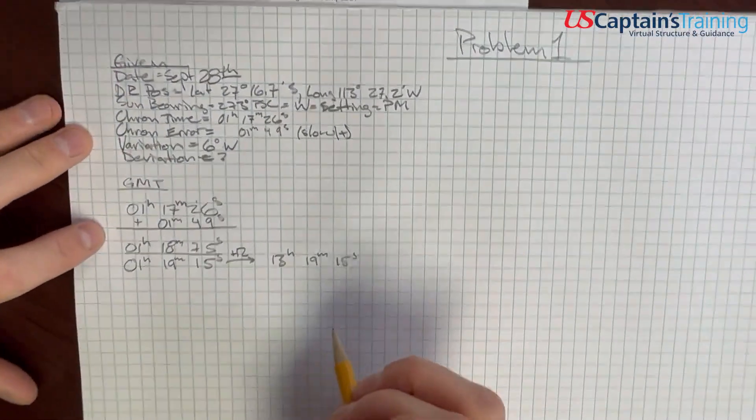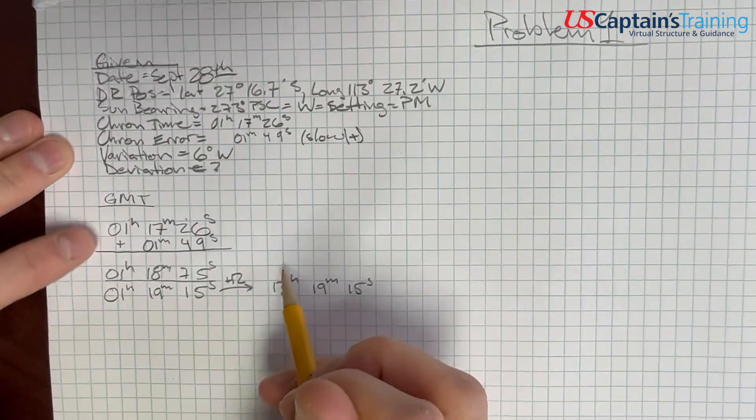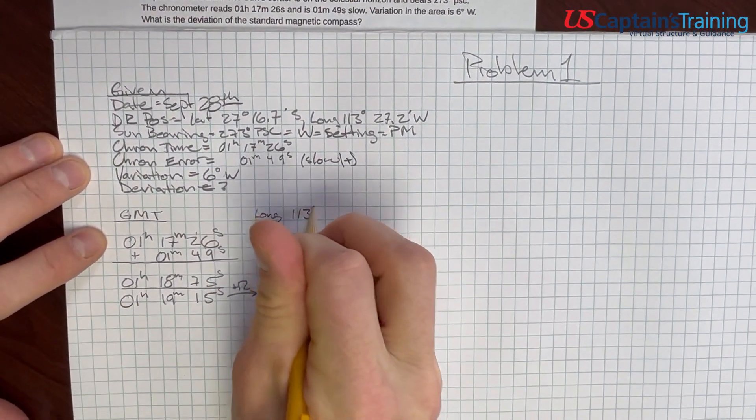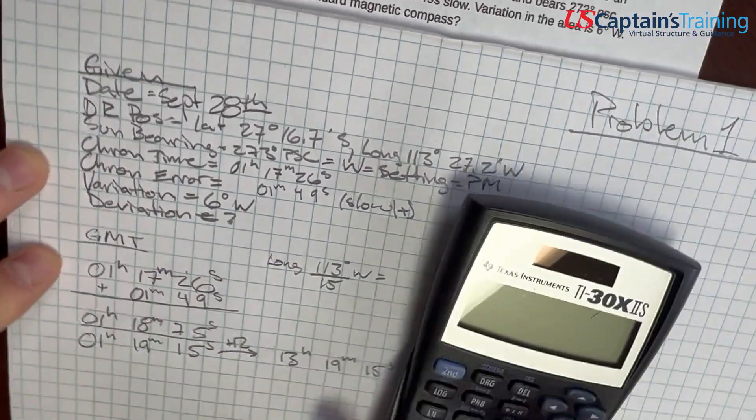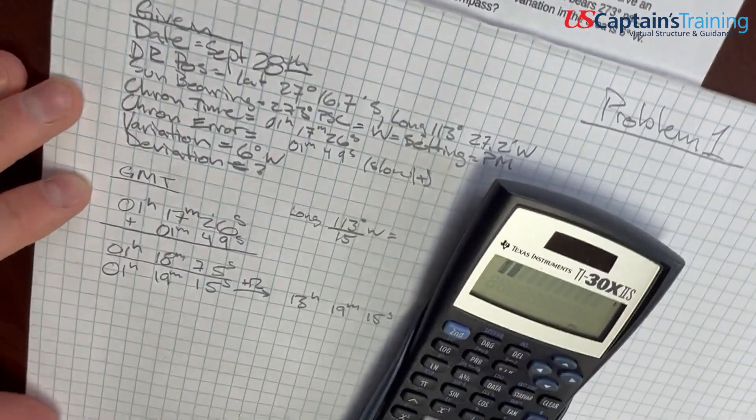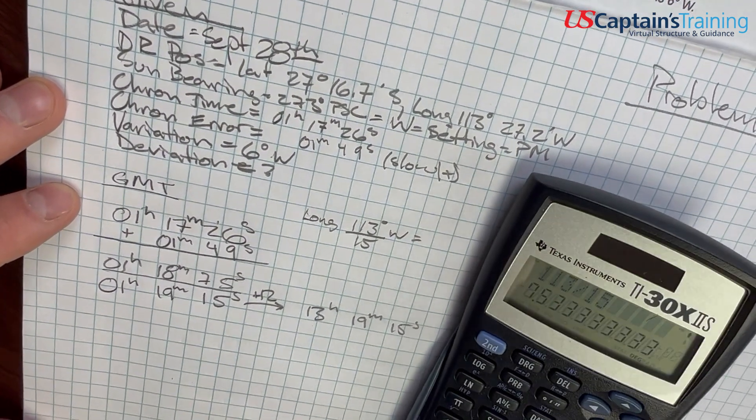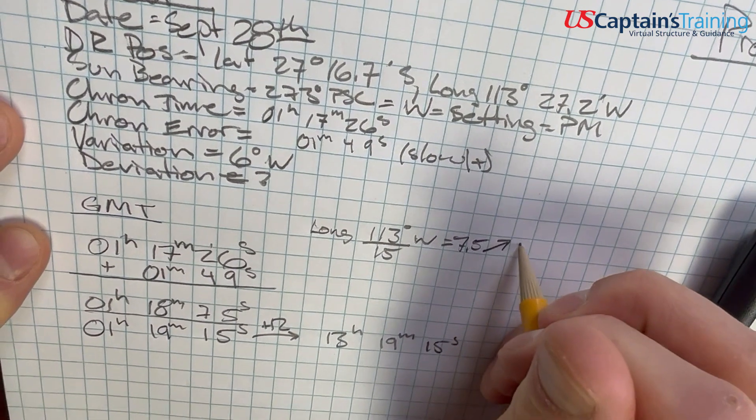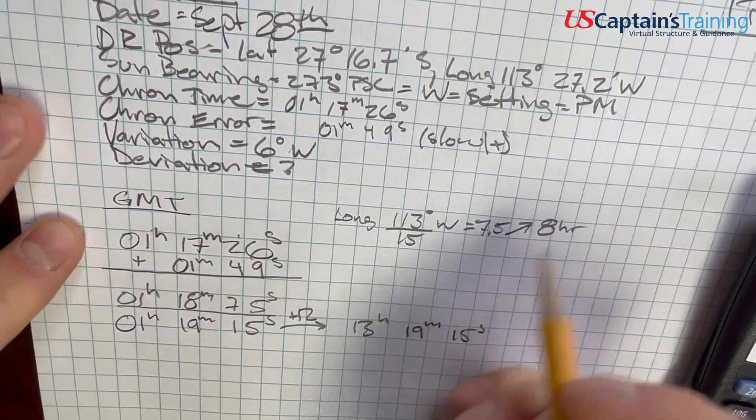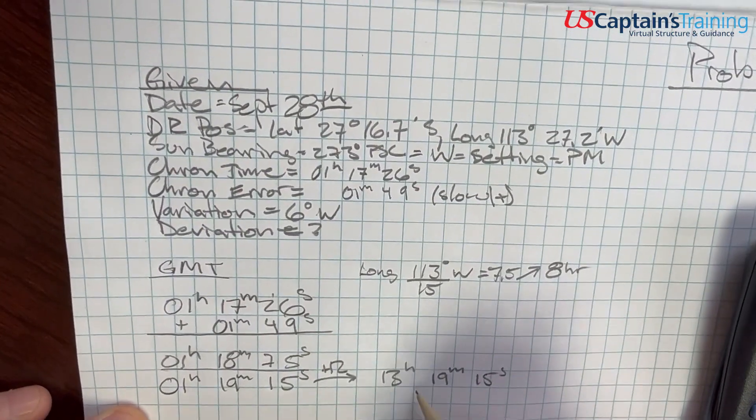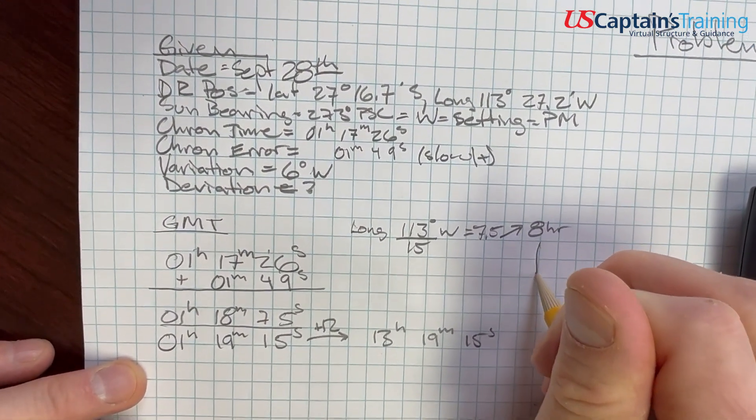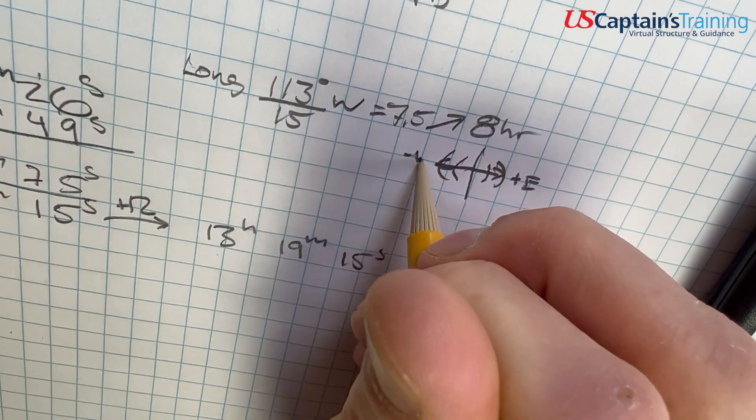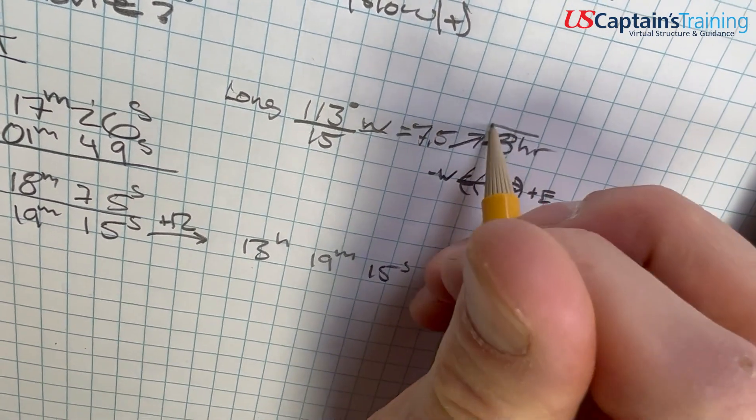Let's find our local mean time. This is Greenwich mean time, but we have a local mean time based on our longitude. We take longitude 113° west, divide it by 15 - that gives us how many hours away from Greenwich we are. 113 divided by 15 equals 7.5. If it's 0.5 or higher, we round up to the nearest hour. So at 7.5, we round up to 8 hours. Since we're in the west, we subtract that 8 hours.